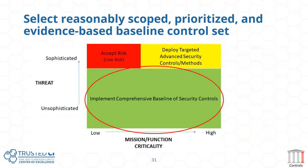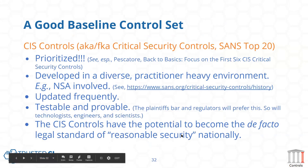The approach is: for unsophisticated attacks, implement a comprehensive baseline of security controls — this takes care of the gray pigeons and the primary noise level. Once you've done that, deploy some targeted advanced security controls associated with things that primarily attack your mission — those are in the upper right of the diagram. For low-risk, very sophisticated attacks, you just have to accept those; it's infeasible to go after them.